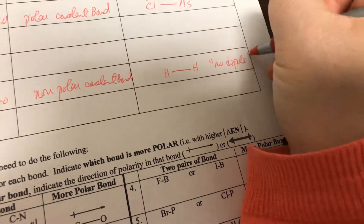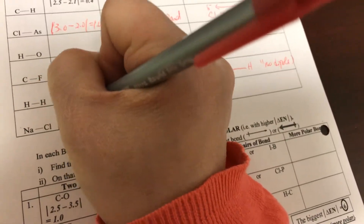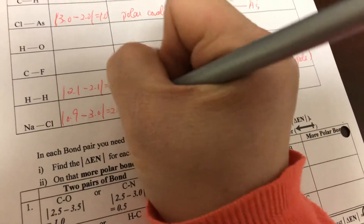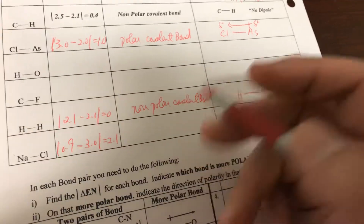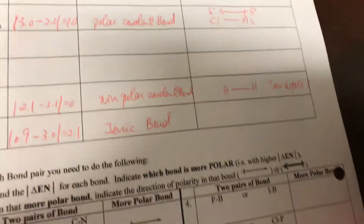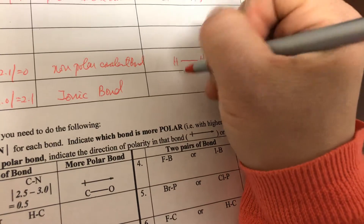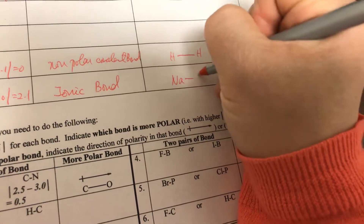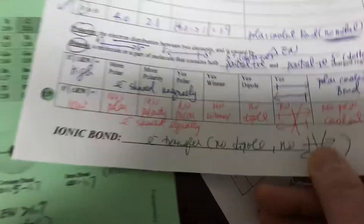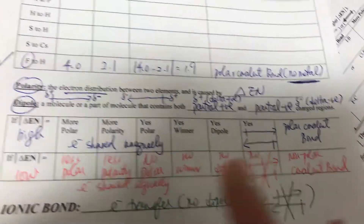For NaCl: Na is 0.9 and Cl is 3.0. The difference is 2.1. Even though 2.1 is bigger than 1.7, it should be ionic because it has a metal. If it's ionic, we write NaCl and write no dipole. Going back — ionic bond, we don't draw the dipole. Only the polar covalent bond gets the dipole drawn.